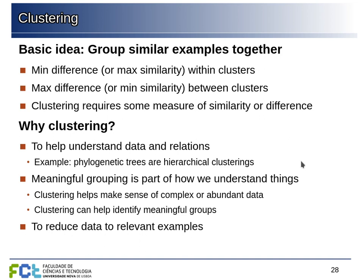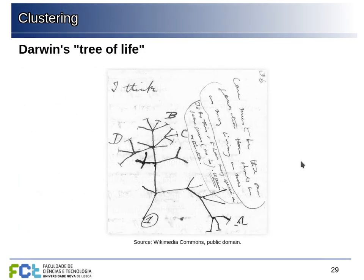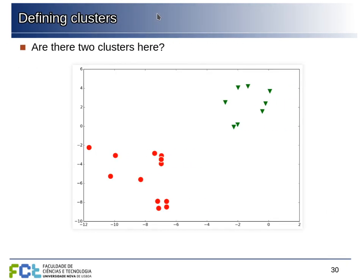This is an early example of clustering — Darwin's drawing of the tree of life — which is hierarchical clustering where some examples are grouped together here, others there, and then groups of groups form as we go up. One question when clustering is how to define clusters. For example, considering some data points, are they separated into two clusters, or three, four, or five? We can consider different numbers of clusters and different criteria for deciding when examples belong to the same cluster.